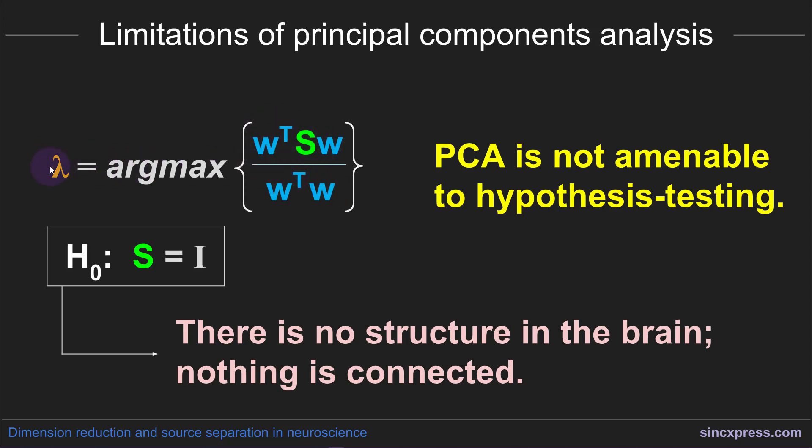So lambda is equal to 1 for every possible value of W. So that's the null hypothesis of PCA. And the way to interpret that is that there is no structure in the brain—nothing is connected to anything else in the brain. Every neuron, every synapse in the brain is completely uncorrelated with every other neuron and every other synapse, every other circuit in the brain.